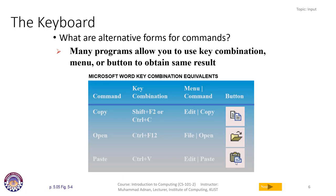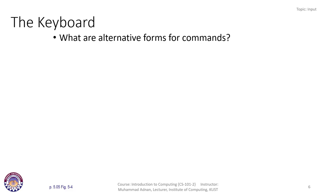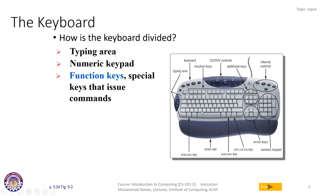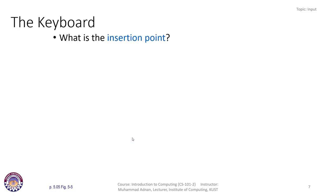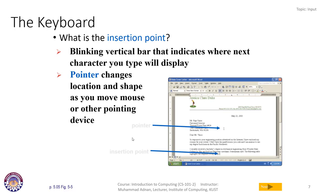Shortcut keys are easy to remember — for copy we have Ctrl+C because C starts with copy. You may ask why we don't use Ctrl+P for paste; that's because Ctrl+P is already used for the print command. We use V because on the keyboard V is very near to C, so when you copy you also paste — that is why we have assigned the key V to the paste operation.